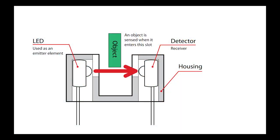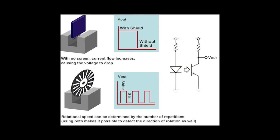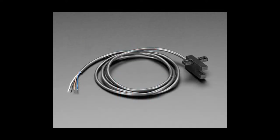The photo interrupter is actually a very basic and simple design. On one side there's an infrared LED and on the other side there's an infrared detector. As the sensor light becomes blocked, the detector makes the output voltage go high, and when the sensor becomes unblocked, the output voltage goes low. The computer can use this to figure out what the event is.